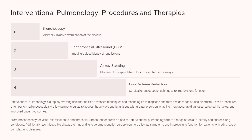Interventional pulmonology is a rapidly evolving field that utilizes advanced techniques and technologies to diagnose and treat a wide range of lung disorders. These procedures, often performed endoscopically, allow pulmonologists to access the airways and lung tissue with greater precision, enabling more accurate diagnoses, targeted therapies, and improved patient outcomes. Key procedures include bronchoscopy, endobronchial ultrasound (EBUS), airway stenting, and lung volume reduction. Bronchoscopy is a minimally invasive examination of the airways, while EBUS uses imaging guidance to perform biopsies of lung lesions. Airway stenting involves placing expandable tubes to open blocked airways, and lung volume reduction techniques can improve lung function for patients with advanced lung diseases.